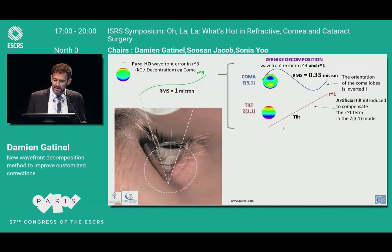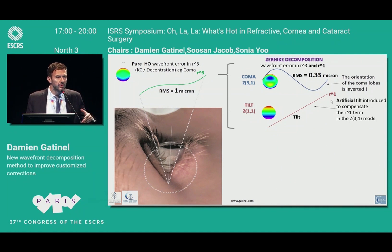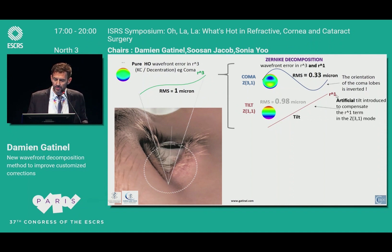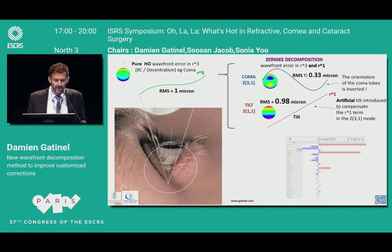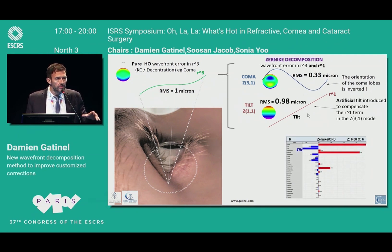That tilt has to be compensated, and then some tilt is introduced, which again explains why when you have coma you always see tilt as if the patient is not fixating well — but it is an artifact. You can see the apparent reduction in coma by a factor of three. Whereas trefoil, which is fine, would not be affected by those same issues.